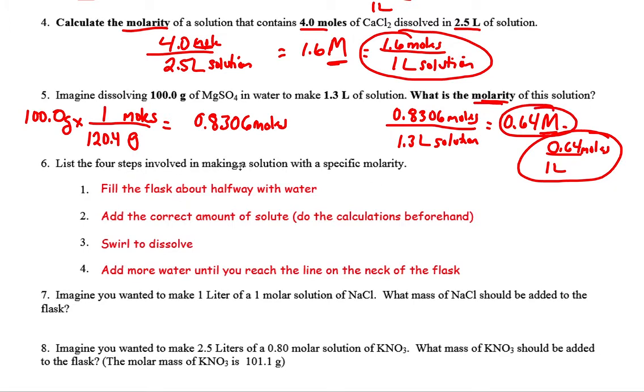All right, four steps involved in making a solution. I first put some water. Fill it about halfway. Not a big deal here. You don't have to measure anything. Just get some water in there. Then you're going to dump in your solute, and some of that solute is immediately going to dissolve in the water. You have to know how much solute, so that's where you have to do your calculations beforehand. And then once you put your little bit of water and then you dump in your solute, you want to swirl it to dissolve. And then you're just going to keep adding more and more water until you reach that line on the neck of the flask.